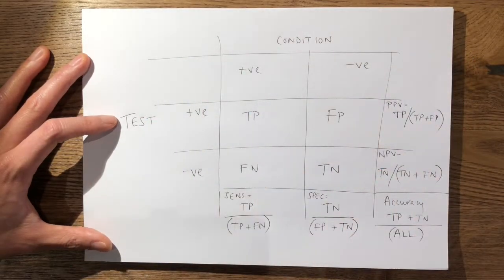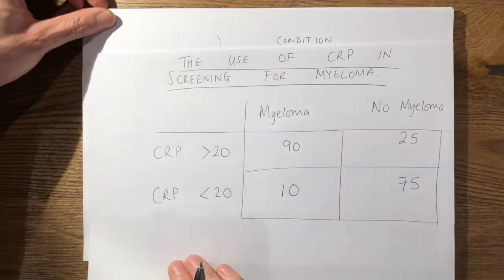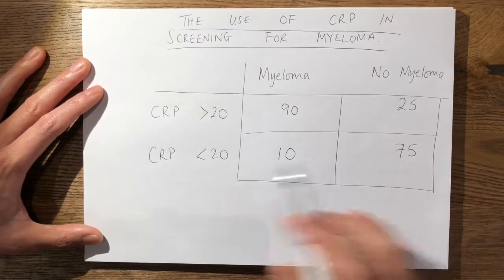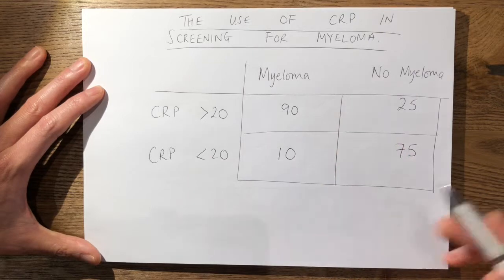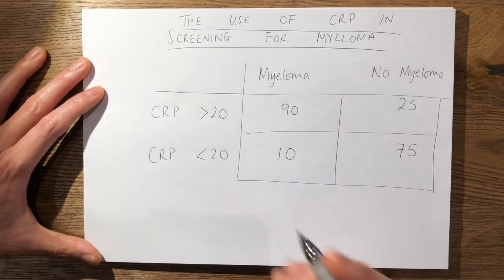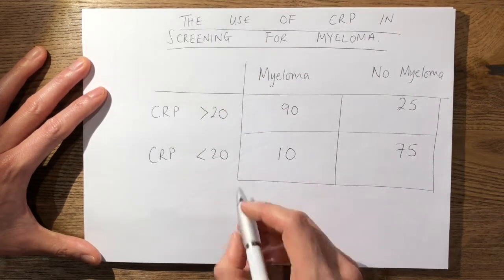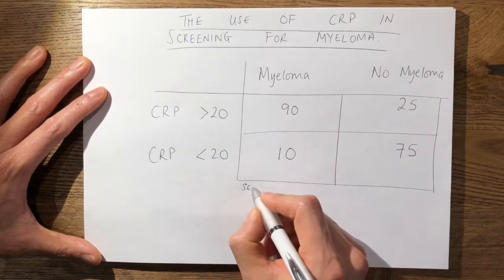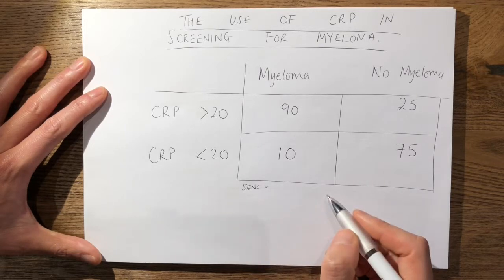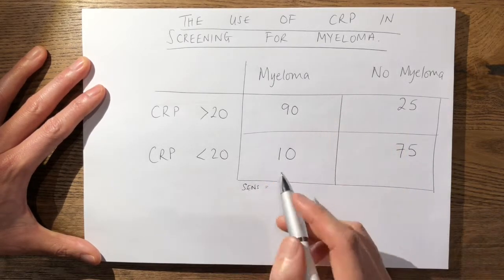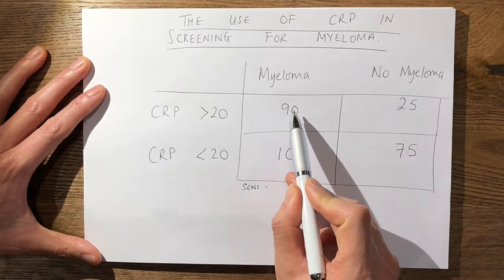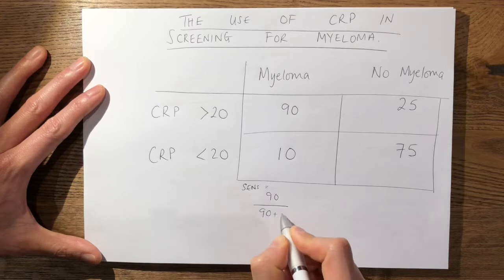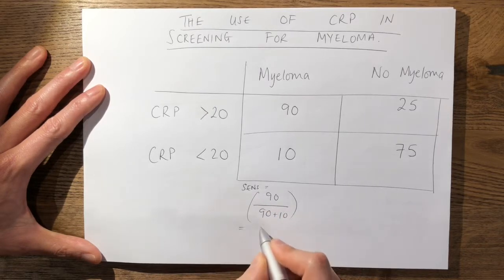Applying this to the question posed, he wanted me to work out the sensitivity and specificity of this test — though he could also have asked for the positive predictive value, negative predictive value, or accuracy. To work out the sensitivity, remember it's your true positive rate: true positives divided by true positives plus false negatives. Here, it's 90 divided by 90 plus 10, which equals 90%.